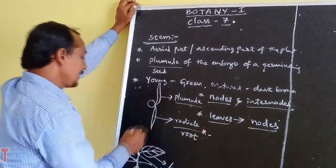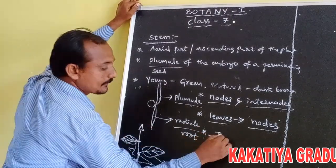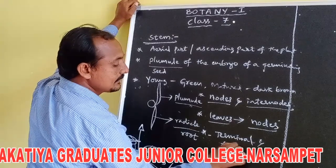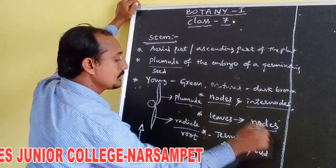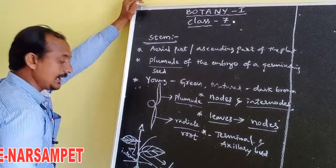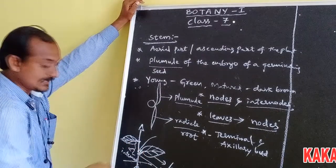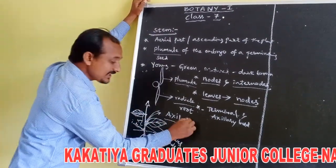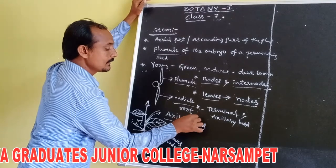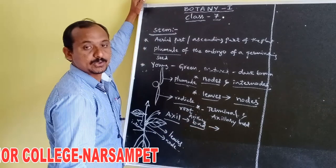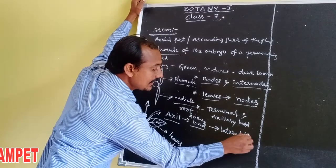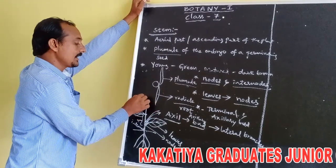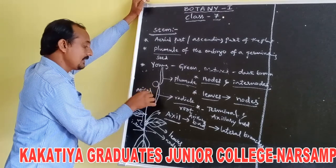The stem also consists of terminal bud and axillary bud. The upper angle between the stem and leaf is called axil. The axillary bud develops from the axil, and at the top of the stem it also contains a bud called the apical bud or terminal bud.